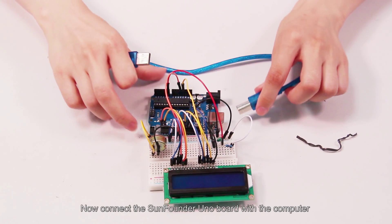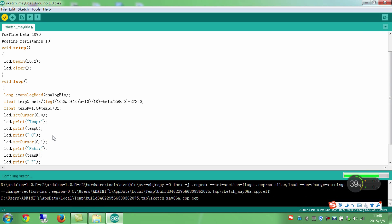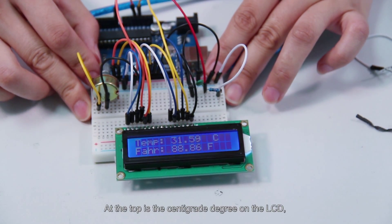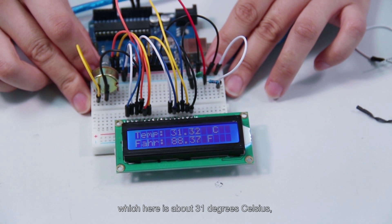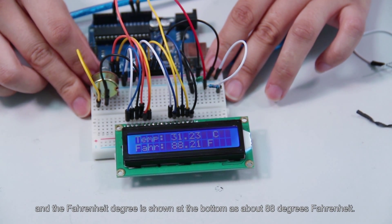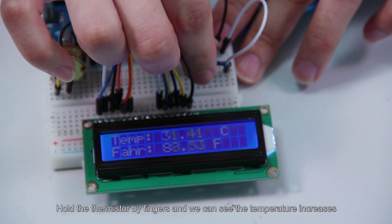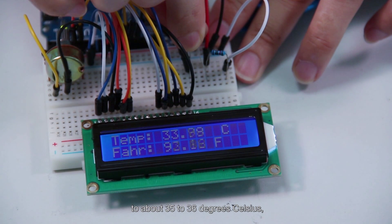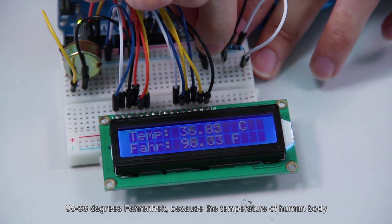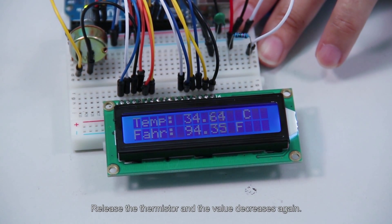Now we can check the results. At the top is the centigrade degree on the LCD, which here is about 31 degrees Celsius. And the Fahrenheit degree is shown at the bottom as about 88 degrees Fahrenheit. Hold the thermistor by fingers and we can see the temperature increases to about 35 to 36 degrees Celsius, 95 to 96 degrees Fahrenheit because the temperature of the human body is a little higher than the room temperature. Release the thermistor and the value decreases again.